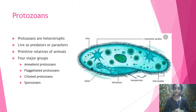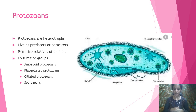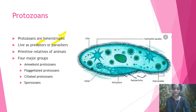Now comes protozoans. Some are predators and some are parasites. The picture shown is paramecium, identified by its slipper shape — a ciliated protozoan. Protozoans are heterotrophs — either predators or parasites. They are further divided into four categories: amoeboid protozoans, flagellated protozoans, ciliated protozoans, and sporozoans.